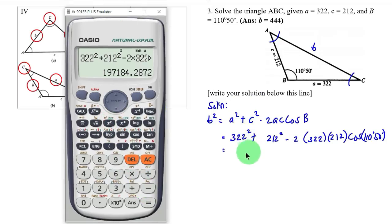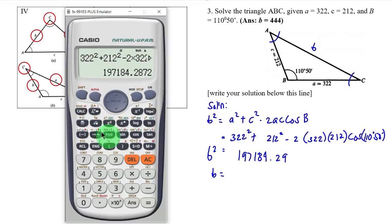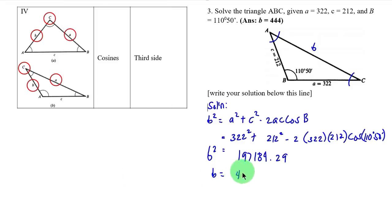This gives us 197,184.29, but this is only b squared, so therefore b is simply the square root of both sides. Square root of 197,184.29 equals 444.05 units. So our answer for side b is 444.05 units.